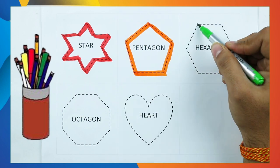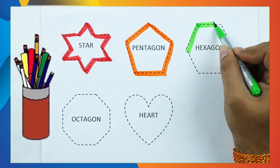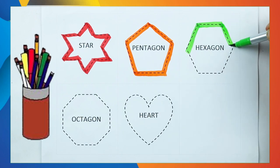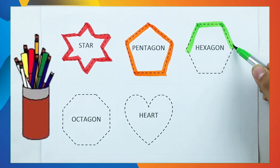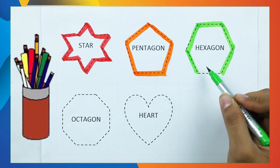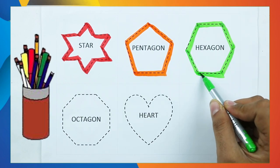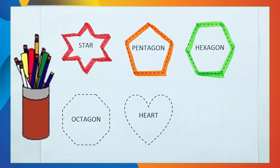Hexagon. One line, two line, three line, four line, five line, six line. It's a hexagon.